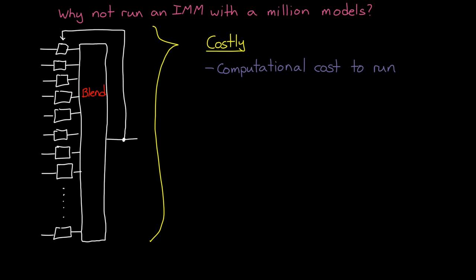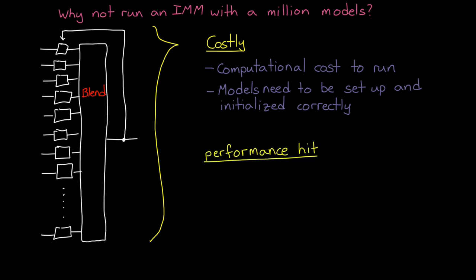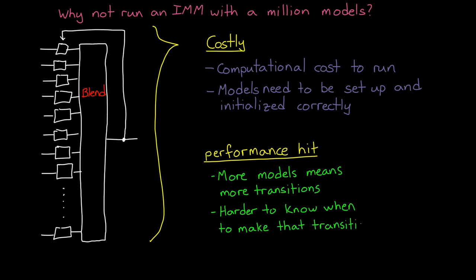In addition, there's also the pain of having to set up all of these filters and get the process noise right. But let's say computational speed isn't a problem for you. You really only care about performance. Well, even then, having too many models can hurt performance. For one, it increases the number of transitions between models. And it's harder to determine when the transition should take place if there's a lot of models that represent very similar motions. And both of these contribute to a less optimal estimation. So unfortunately, you still have to approach this filter in a smart way and try to find the smallest set of models that can adequately predict the possible motions for the object that you're tracking. Practically speaking, this tends to be less than 10 models and usually around just three or four.